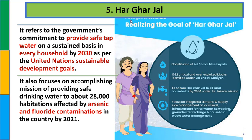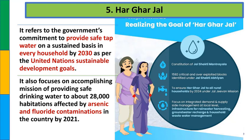इसमें arsenic और fluoride affected areas पर भी ध्यान दिया जाता है. SDG की बात करें तो SDG 6 है - Sustainable Development Goal 6 जो कहता है 'clean water and sanitation for all'. हर घर जल को हम SDG 6 से relate कर सकते हैं.